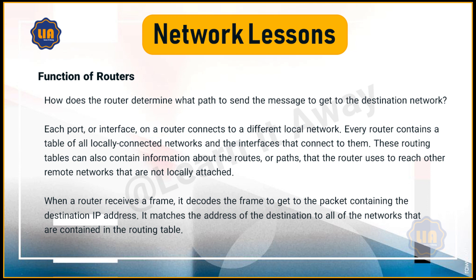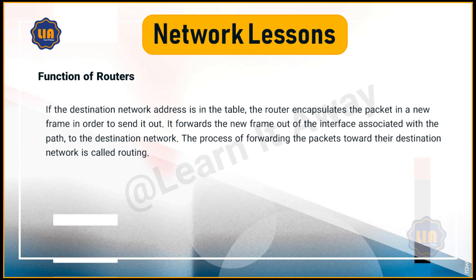When a router receives a frame, it decodes the frame to get to the packet containing the destination IP address. It matches the address of the destination to all of the networks that are contained in the routing table. If the destination network address is in the table, the router encapsulates the packet in a new frame in order to send it out. It forwards the new frame out of the interface associated with the path to the destination network. The process of forwarding the packets toward their destination network is called routing.